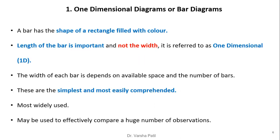A bar diagram has the shape of a rectangle filled with color. The length of the bar is important, not the width, which is why it is referred to as one-dimensional. The width of each bar depends on available space and number of bars. Bar diagrams are the simplest and most easily comprehended, most widely used, and effectively compare a large number of observations.